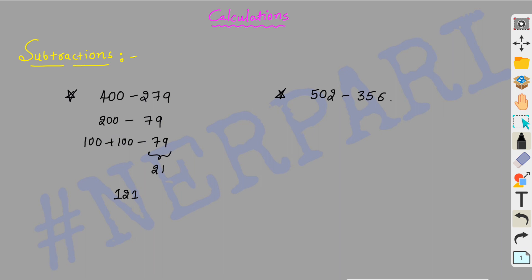Now we have to solve 502 minus 356. First, we split: 500 and 300 gives 200. Here there is 2. We have to work with 56. So 200 and 56 are treated the same way - it's 100 plus 56. If we choose 100 plus 56, the complement added to make 100 is 44. So 44 added to 56 gives 100.